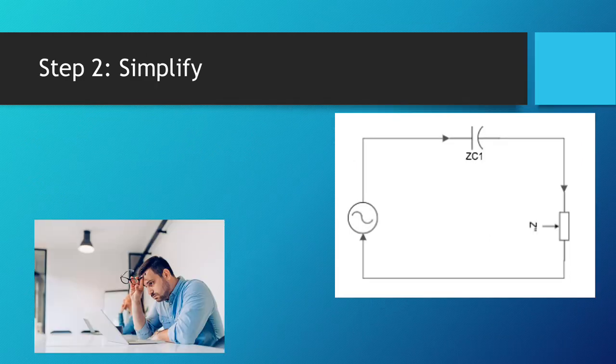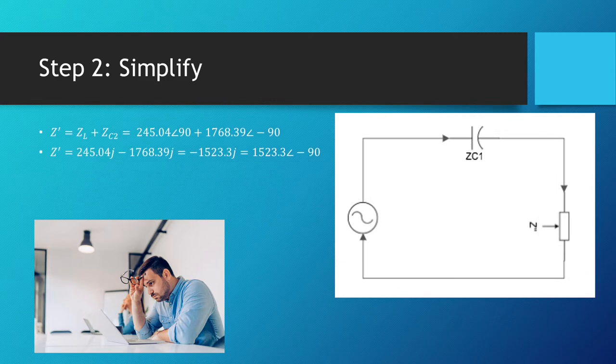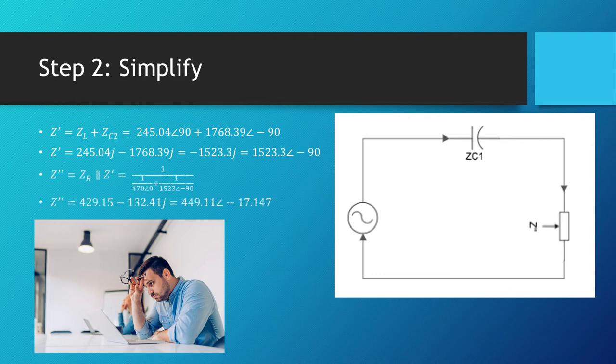Now we're just going to simplify. So first we're going to look at the left-hand side of the parallel circuit and change that into one component where Z′ is equal to the impedance at the inductor and the impedance at the second capacitor. Next we're going to also change the parallel circuit into one component where Z″ is the parallel circuit of ZR and Z′. So we'll get a final value of Z″ at 449.1 at an angle of negative 17 degrees.